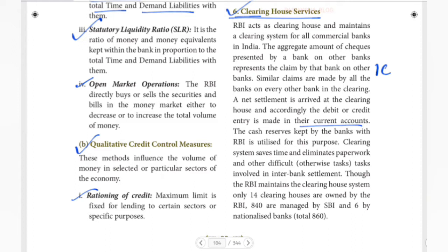The clearing houses are owned by the RBI. 840 are managed by SBI, and 6 are by nationalized banks. 14 are managed by RBI directly.